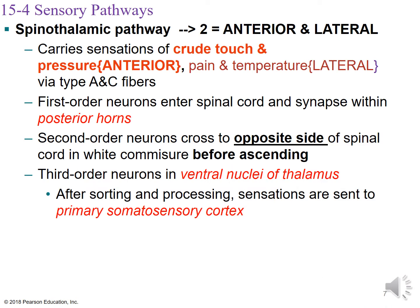Let's start with the first tract: the spinal thalamic pathway, shown in red. This pathway has two tracts. The anterior pathway carries sensations of crude touch and pressure, whereas the lateral carries sensations of pain and temperature. This information is carried via type A and C fibers through this particular pathway.